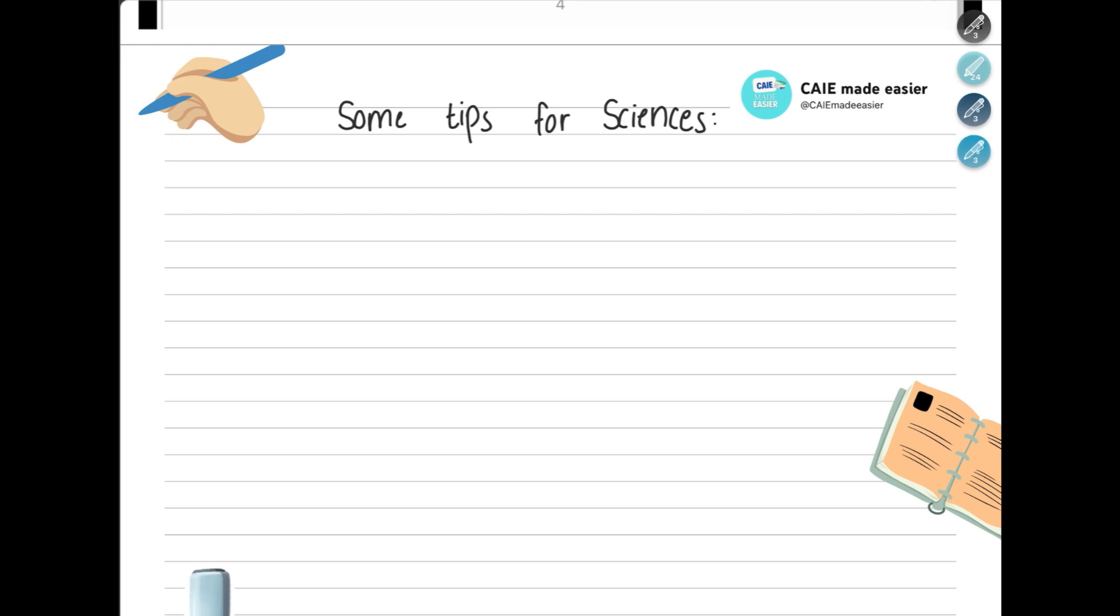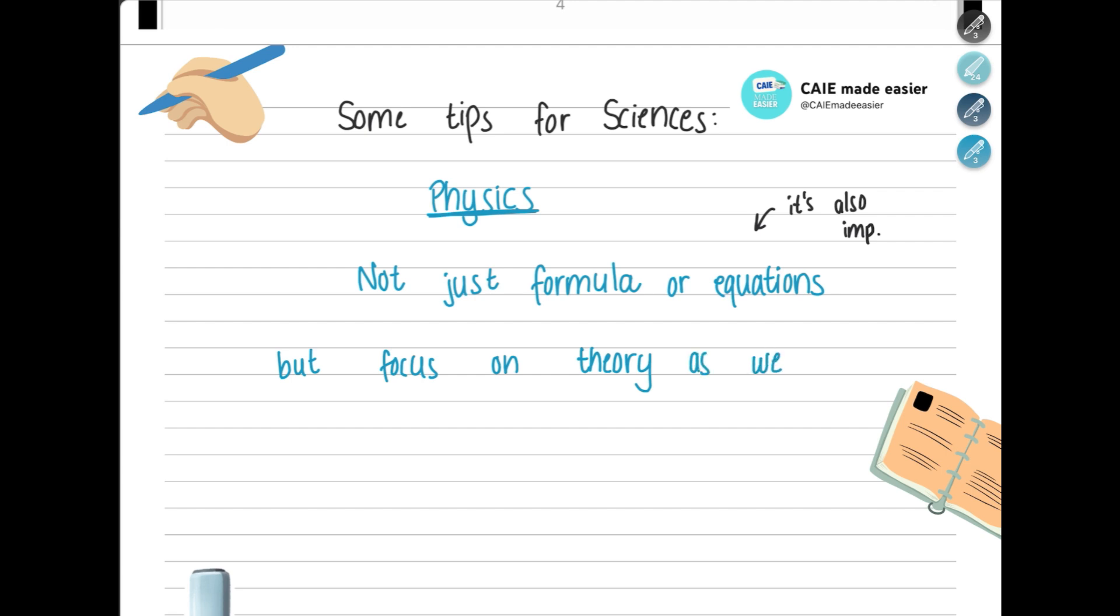Now, we will discuss some tips for sciences starting with physics. It's very important to master all the key formulas. Make sure that you can recall the important formulas such as speed, acceleration, and force. But don't just focus on that. Focus on the theory part as well. Make sure that you know the definitions because you'll get straightforward questions.